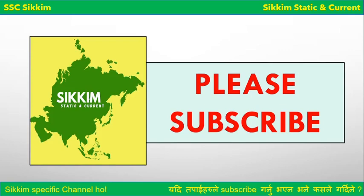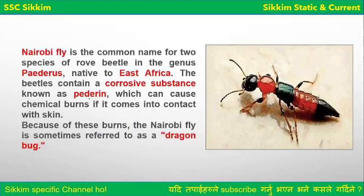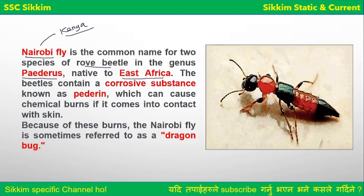So let us proceed. First of all, let us see what Nairobi Fly is. Nairobi Fly is a common name for two species of Rove Beetle, belonging to the Pederus genus. It is native to East Africa. Nairobi is actually the name of a city — it is the capital of Kenya.